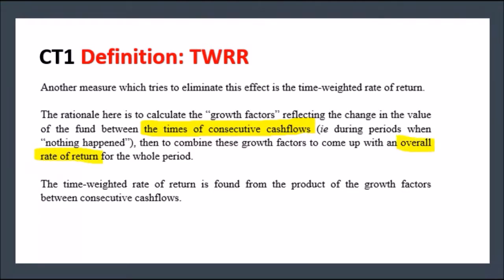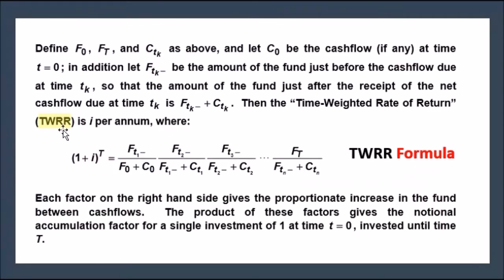The time-weighted rate of return is found from the product of the growth factors between consecutive cash flows. We include any additional cash flows and following factors. Checking out the formula, this is how the formula actually looks like.